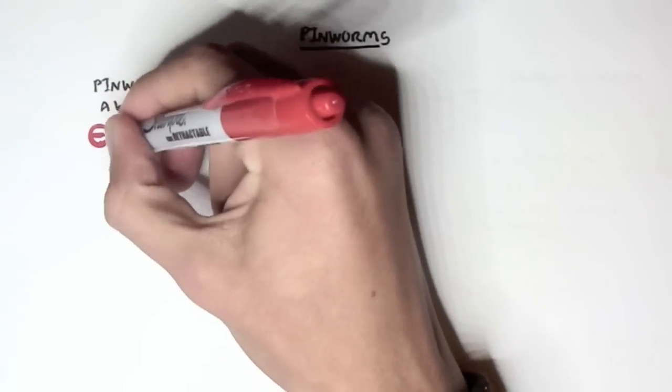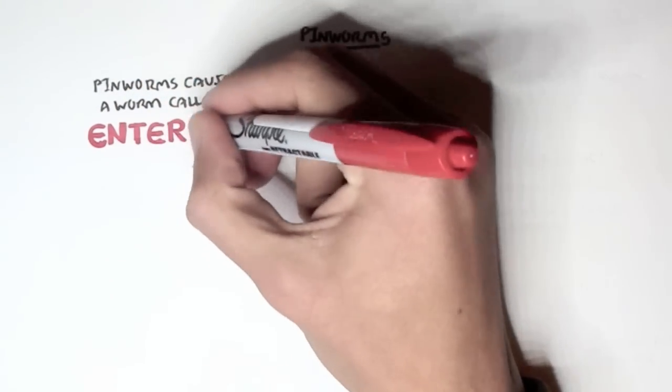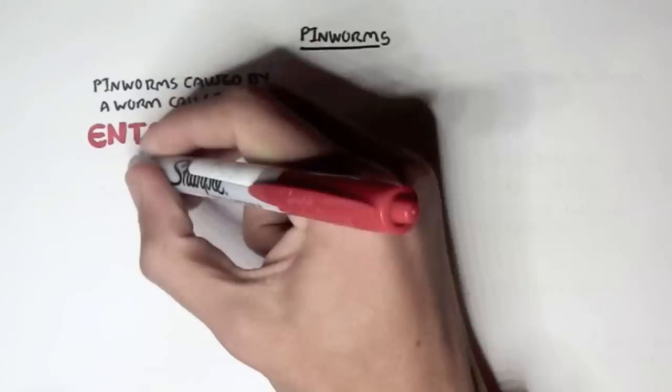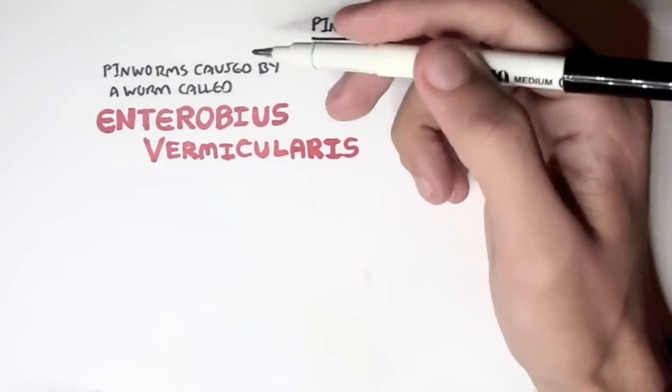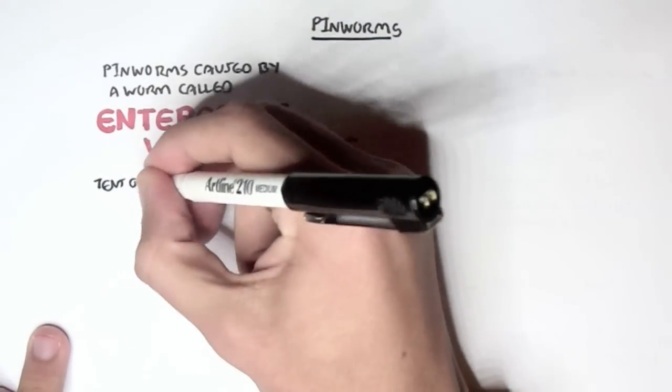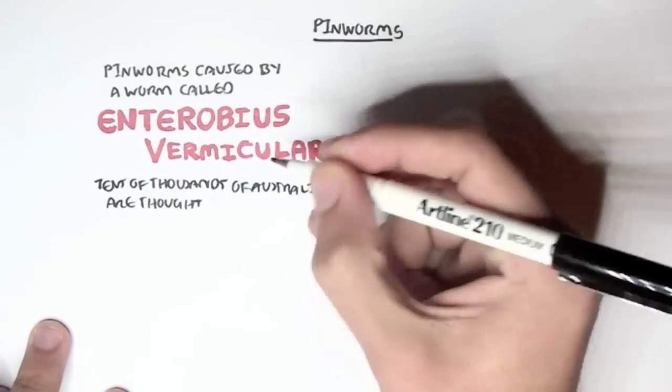Pinworms are caused by the worm called Enterobius vermicularis. About tens of thousands of Australians, particularly, are thought to carry this worm asymptomatically.